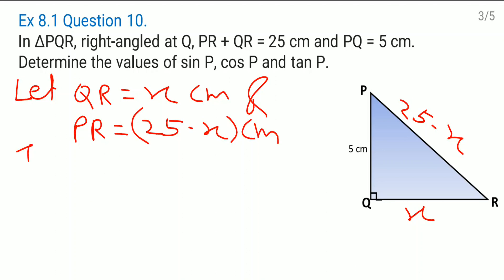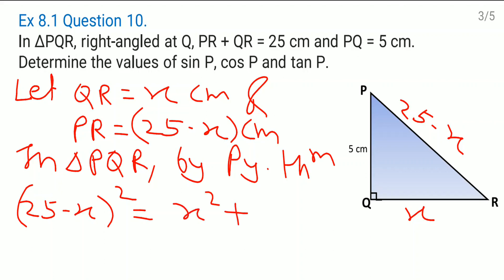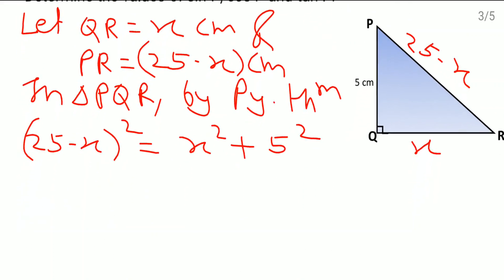Then in triangle PQR by Pythagoras theorem here directly I will write down 25 minus X the bracket square because this is hypotenuse square and then square of the sum of the other two sides X. That means X square plus 5 square. We will make the square of this one here. Just see.